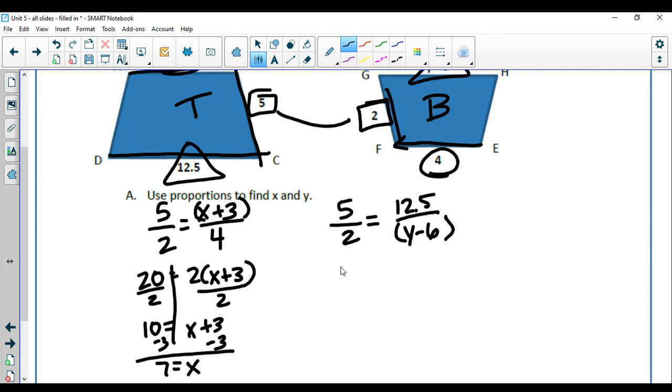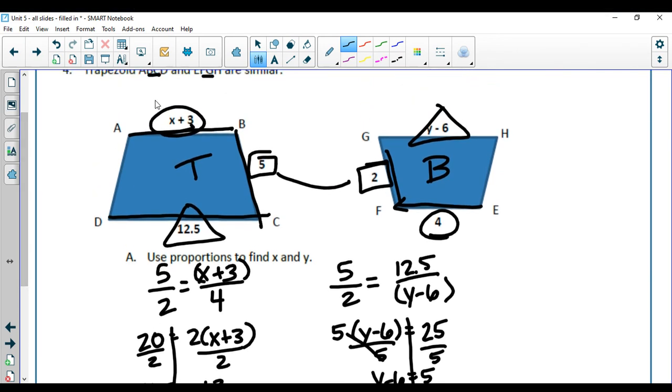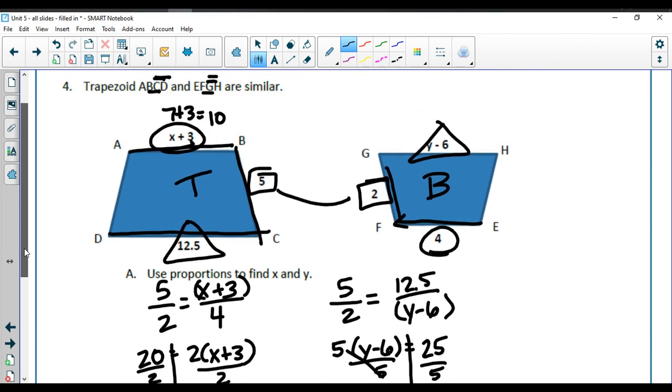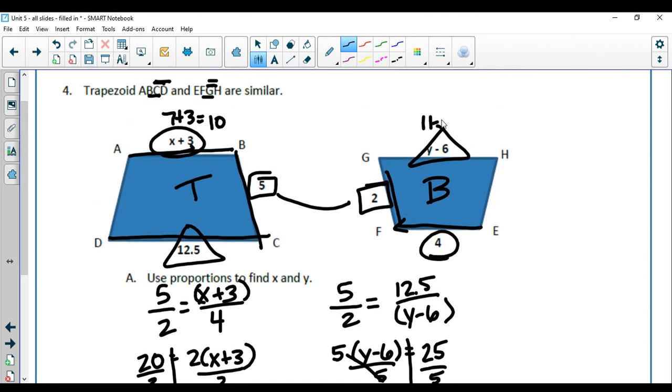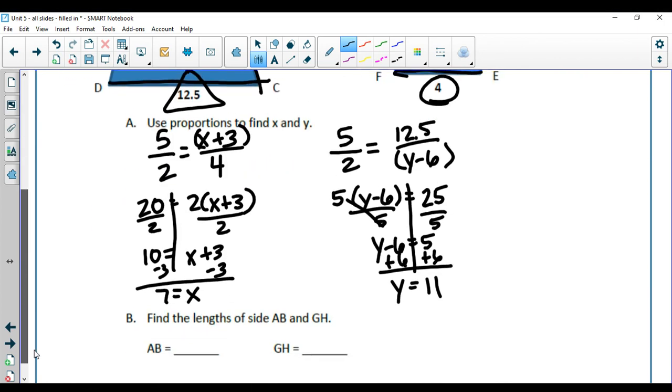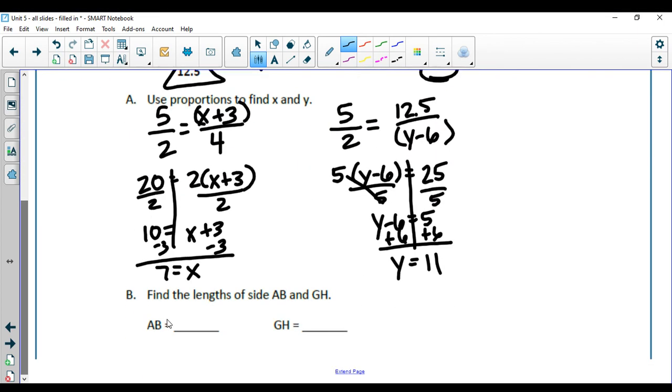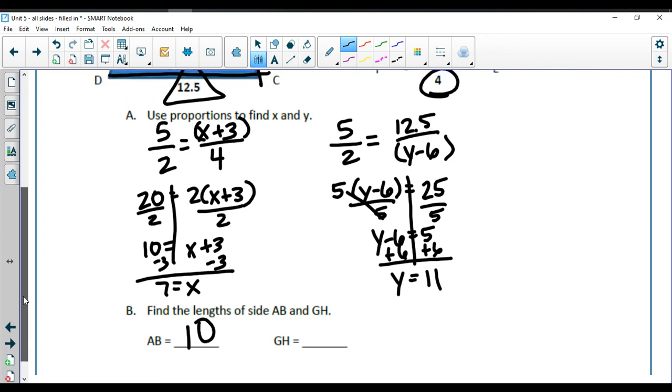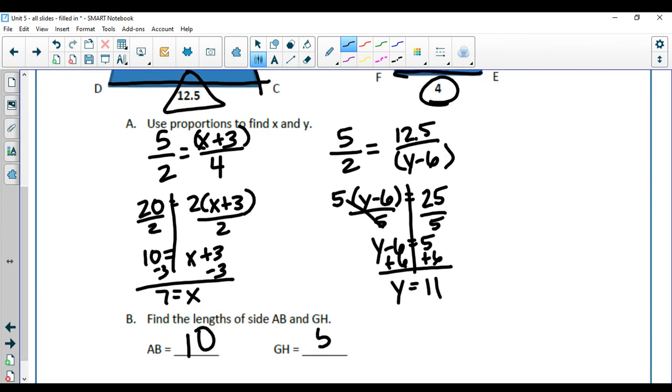Over here, put that in parentheses. I have 5 times parentheses y minus 6, and 2 times 12.5 is 25. I'm going to divide by 5, I get y minus 6 equals 5. Add 6 to both sides, and I get y equals 11 here. So 7 is my x, so 7 plus 3 which is 10. And 11 is my y, so 11 minus 6 which is 5. So down here, AB equals 10, and GH over here is going to equal 5.